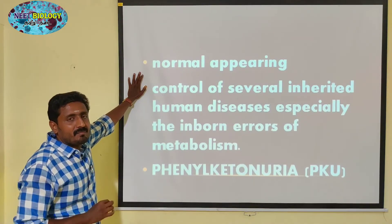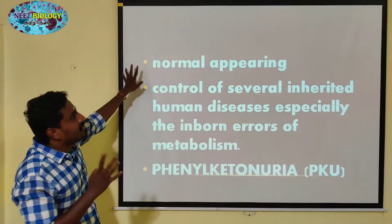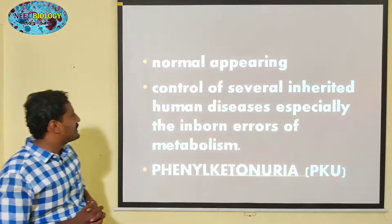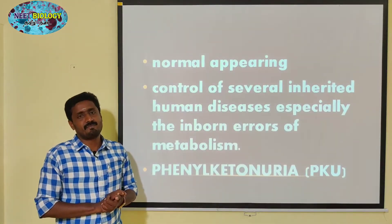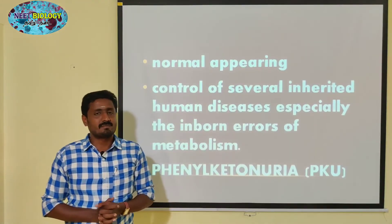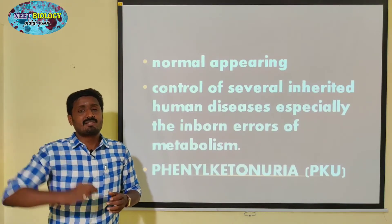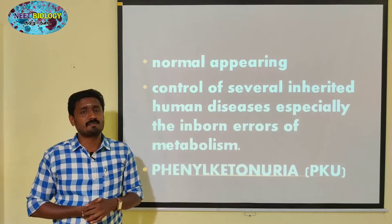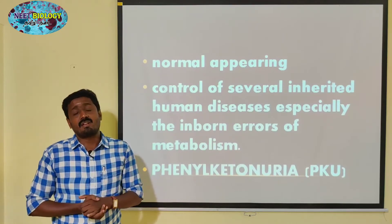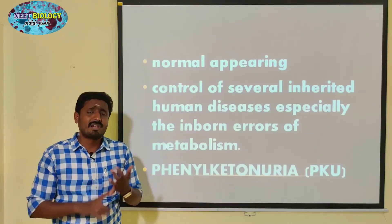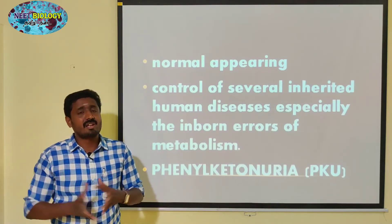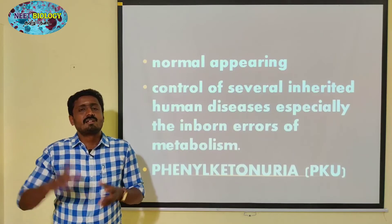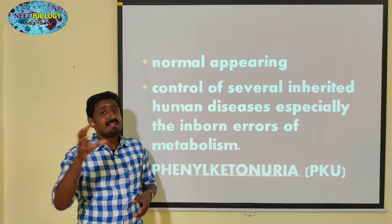That is a phenotype. Without any change in the phenotype, we can correct inherited human disease, especially the inborn errors of metabolism. This is phenylketonuria — this is a topic you can study. Phenyl concentration affects the person and the brain. It is related to paralysis, a nervous disorder, and the kidney is also a problem. Phenylketonuria involves phenylalanine as a substance.